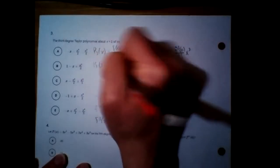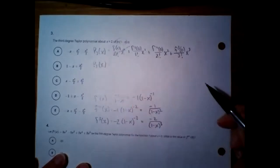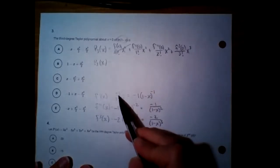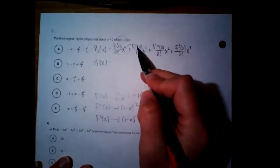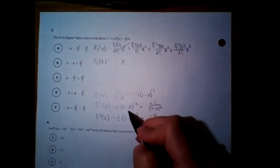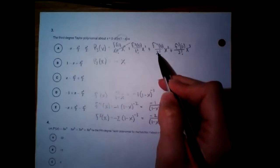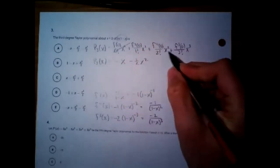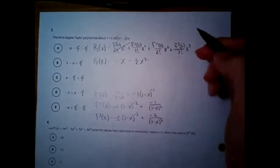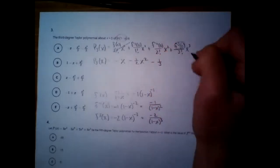Now evaluate all of these. f(0): ln(1) equals 0, so that entire first term is gone. First derivative at 0: negative 1 over 1, so numerator is negative 1, 1 factorial is 1 — this gives negative x. Second derivative at 0: negative 1 over 1 is negative 1, over 2 factorial which is 2 — so minus 1/2 x squared. Third derivative at 0: negative 2 over 1 is negative 2, and 3 factorial is 6 — so negative 1/3 x cubed.